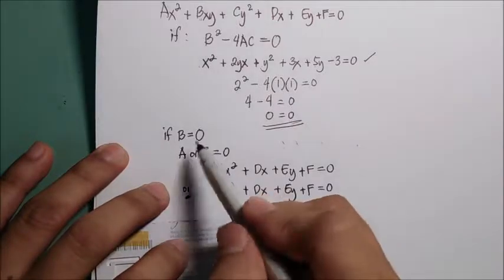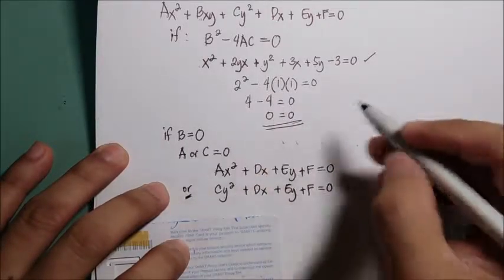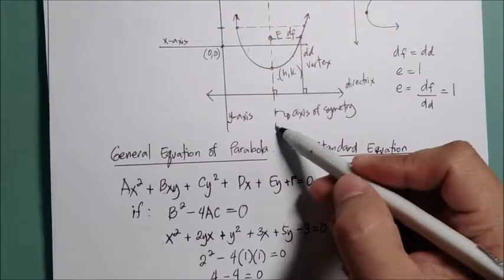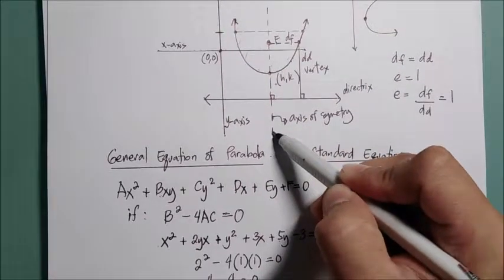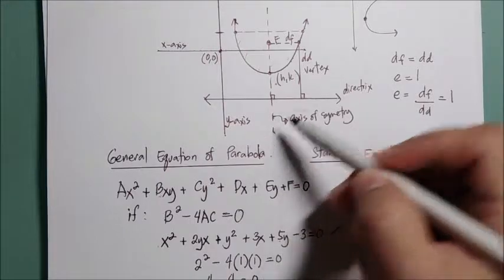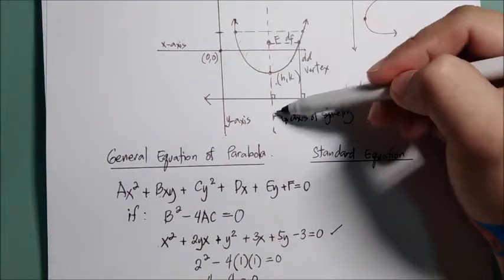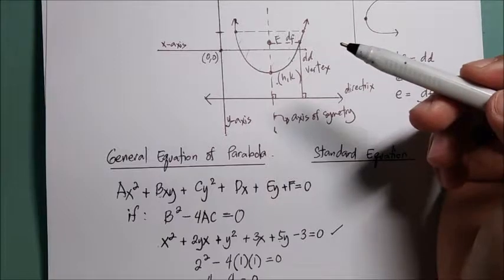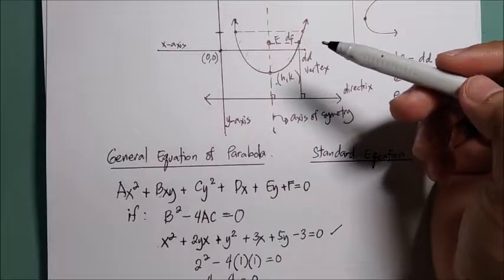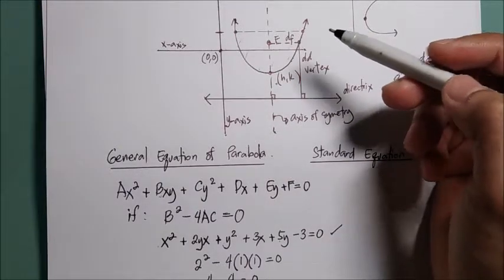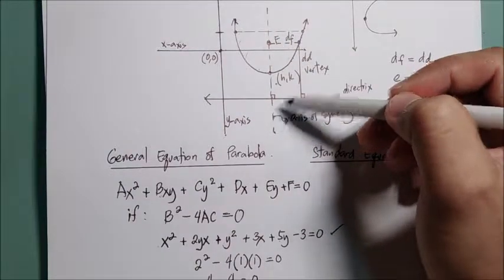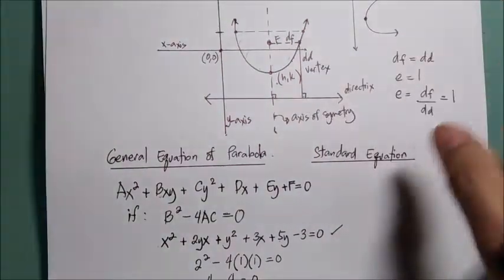The meaning of b = 0 is that the axis of symmetry is parallel to either the x-axis or the y-axis.